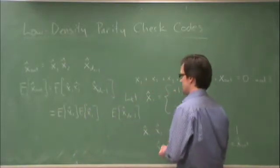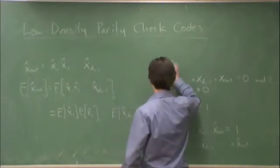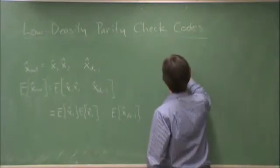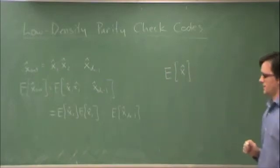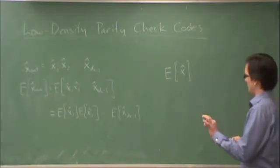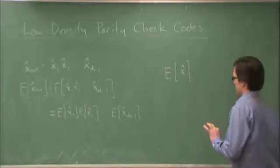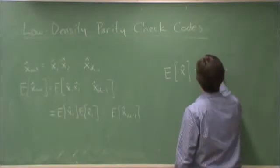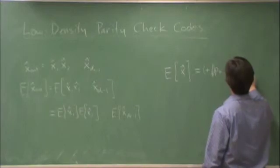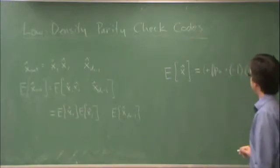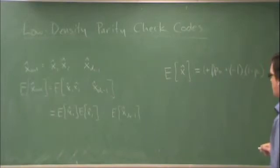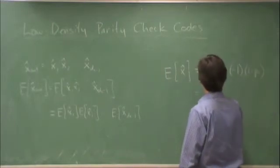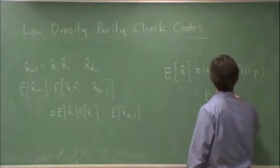Why is that important? Well, what's the expected value of x hat? So if x hat can take two values, it's plus 1 if x is 0 and it's minus 1 if x is 1. So this is equal to plus 1 times p0 plus minus 1 times 1 minus p0, which is equal to, I'm going to keep it in this form, p0 minus 1 minus p0.